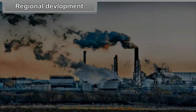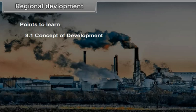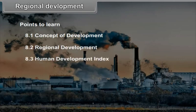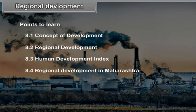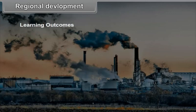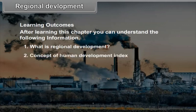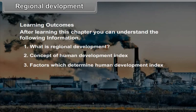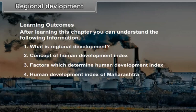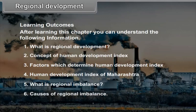Chapter 8: Regional Development. Points to Learn: 8.1 Concept of Development, 8.2 Regional Development, 8.3 Human Development Index, 8.4 Regional Development in Maharashtra. Learning Outcomes: After learning this chapter, you can understand what is Regional Development, the concept of Human Development Index, factors which determine it, Human Development Index of Maharashtra, what is Regional Imbalance, and causes of Regional Imbalance.